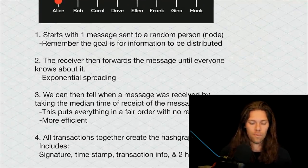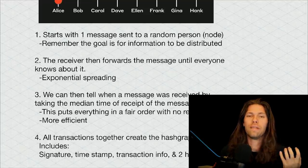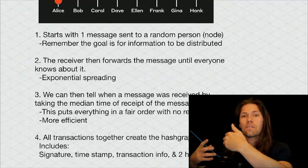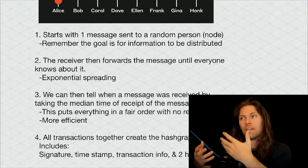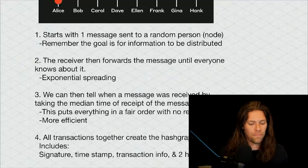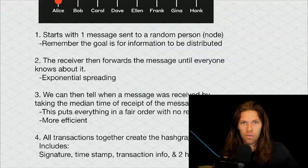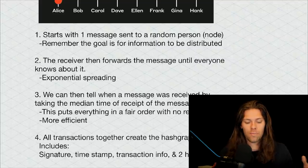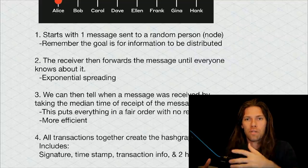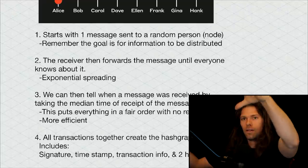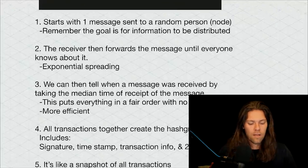Again, all the individuals in the network eventually get all the information on the new transactions. So covering this a little bit more in depth, first starts with one message sent to a random person, a node. Remember, the goal is for information to be distributed. You want everyone on the network to have that information, ideally as quickly as possible and with as few resources as possible. The receiver then forwards the message until everyone knows about it. This is exponential spreading, this is the kind of virus effect I said. You send that to one person, that person sends it to another, it builds up exponentially.